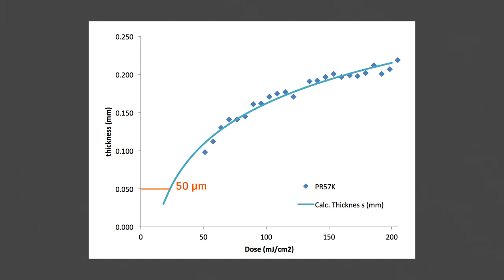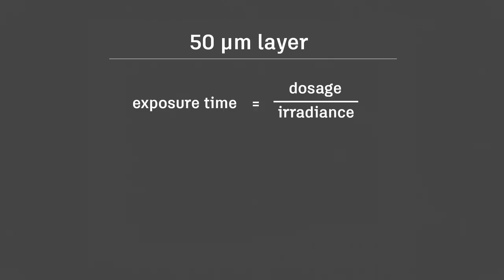Then we locate the layer thickness we want to print at, and find the dosage required to cure. For the ember printer, the irradiance is about 20mW per cm2. This gives us an exposure time of 1.25 seconds. But we are not quite there yet.